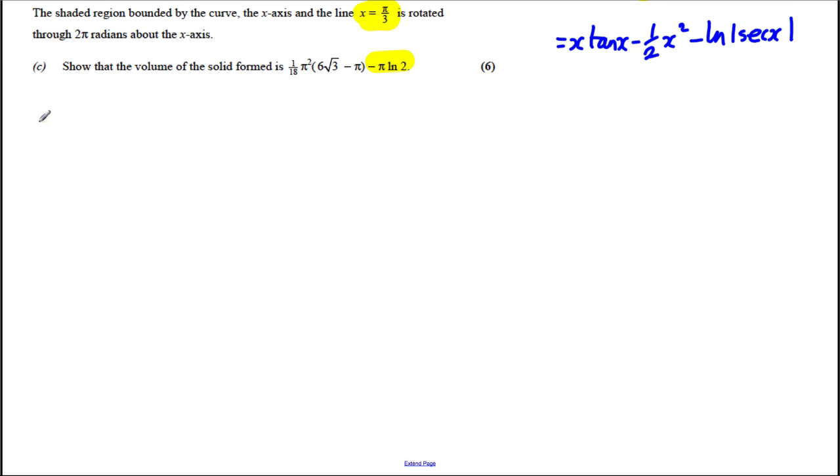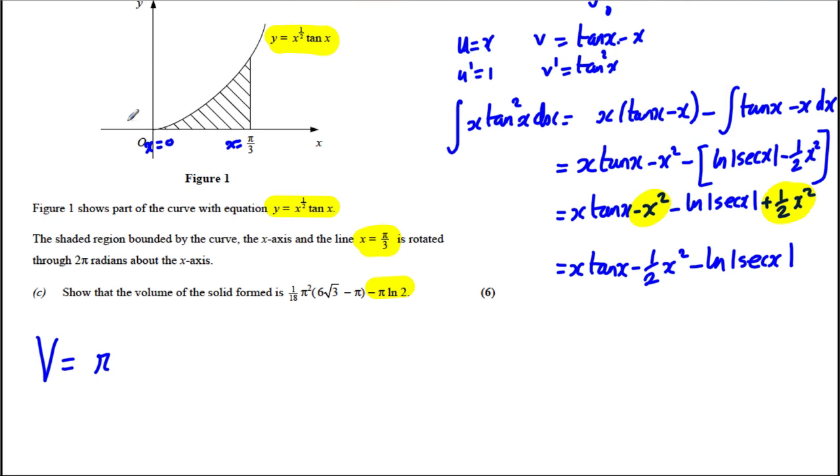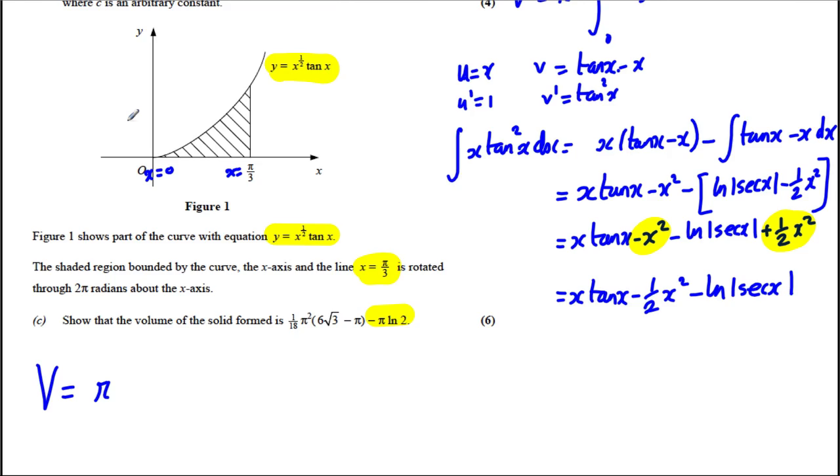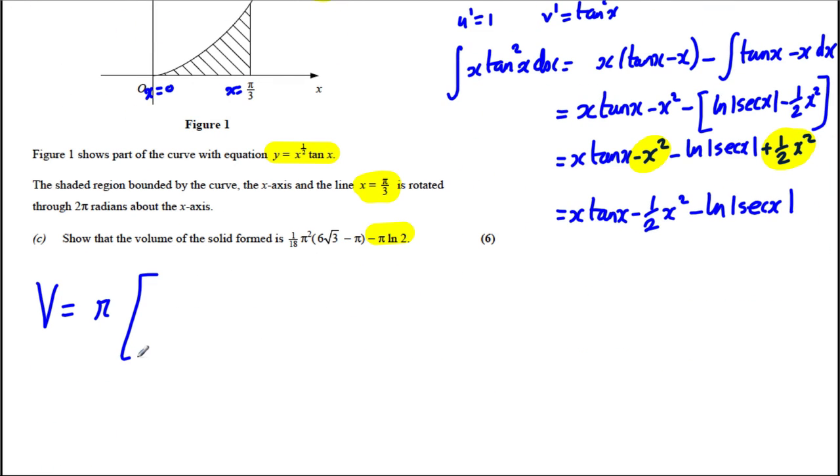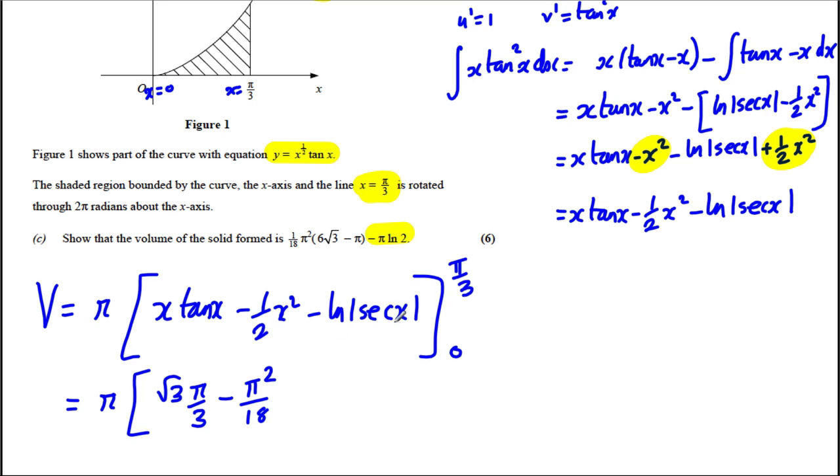Now let's actually go on and do this volume question. The volume is pi and then this integral here evaluated between 0 and pi by 3. So it's going to be pi x tan x subtract half x squared, subtract ln sec x between 0 and pi by 3. Let's keep the pi there and let's put in pi by 3. This will be pi by 3 times tan of pi by 3. Tan of pi by 3 is root 3. So this is going to be root 3 pi over 3. Put in pi by 3 here and I'm going to get pi squared over 9. So subtract pi squared over 18 and put in pi by 3 here.